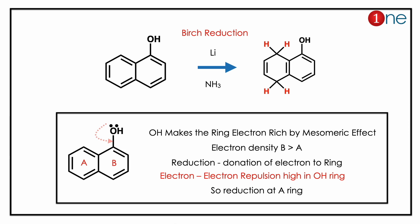Birch reduction involves donation of electrons to the ring. The reaction preferentially occurs at the electron-rich ring. The OH group makes the attached ring electron-rich, giving it high electron density. Therefore, Birch reduction predominantly occurs at the A ring, not the B ring.